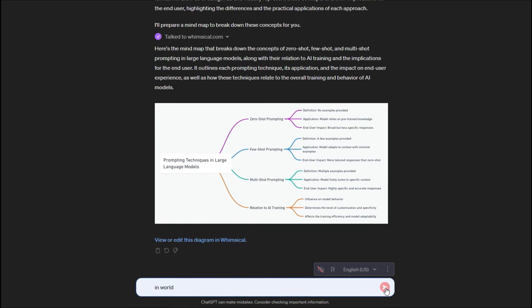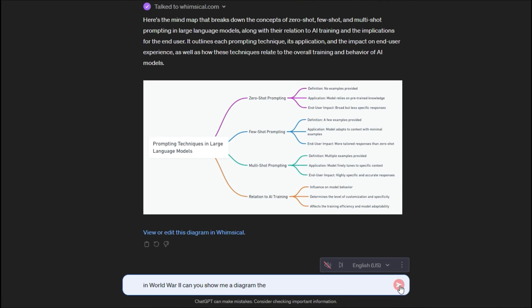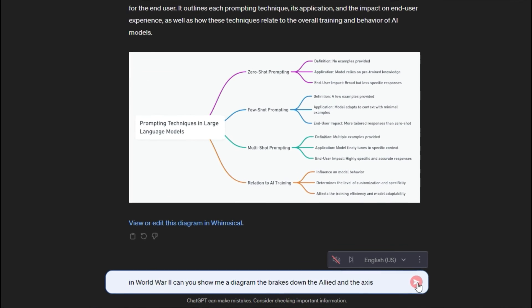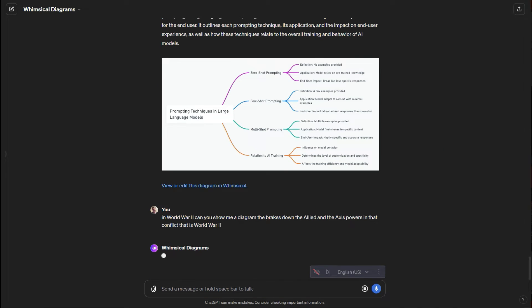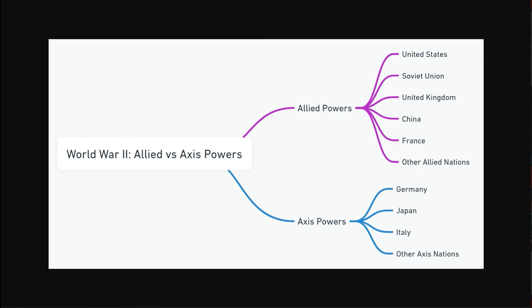In World War II, can you show me a diagram that breaks down the Allied and the Axis powers in that conflict that is World War II? So here's that output, just to show you that basically any sort of idea that you would want to break down, whether it be something from history, it could be a scientific idea,